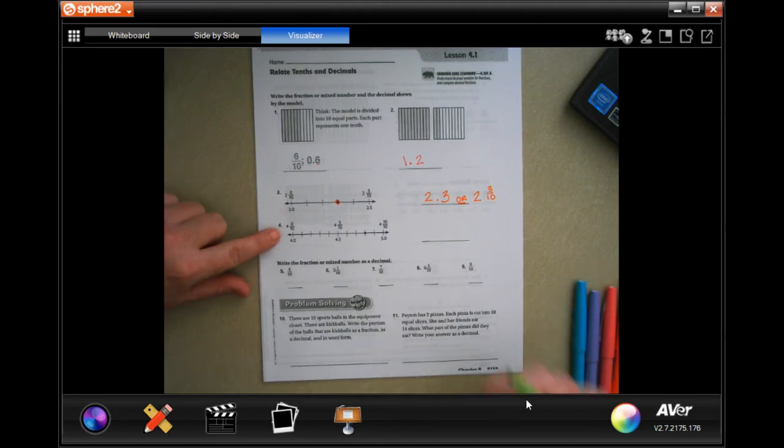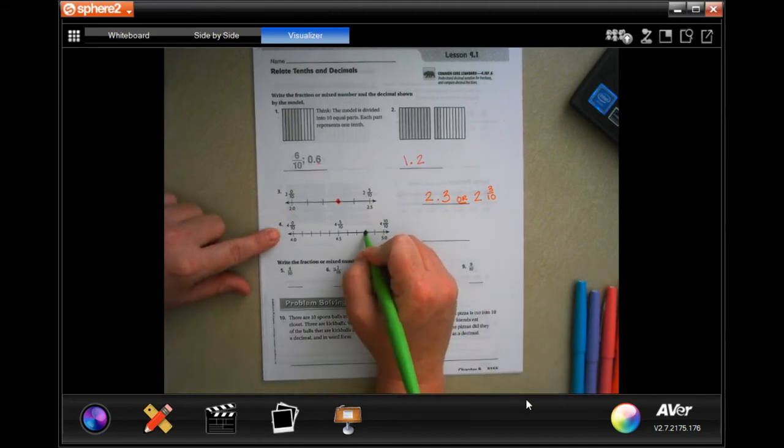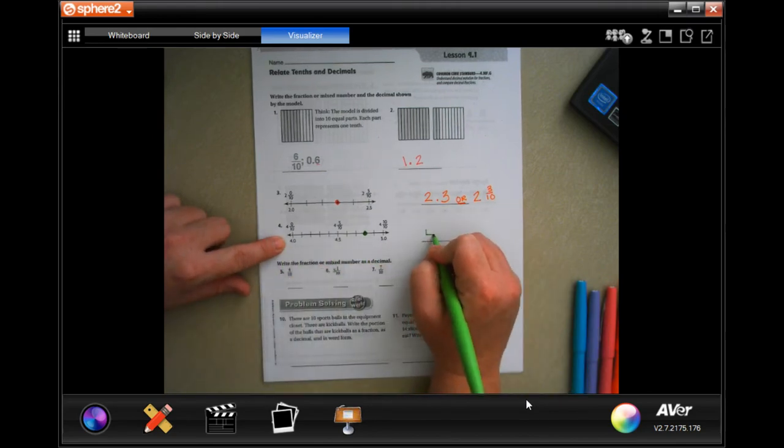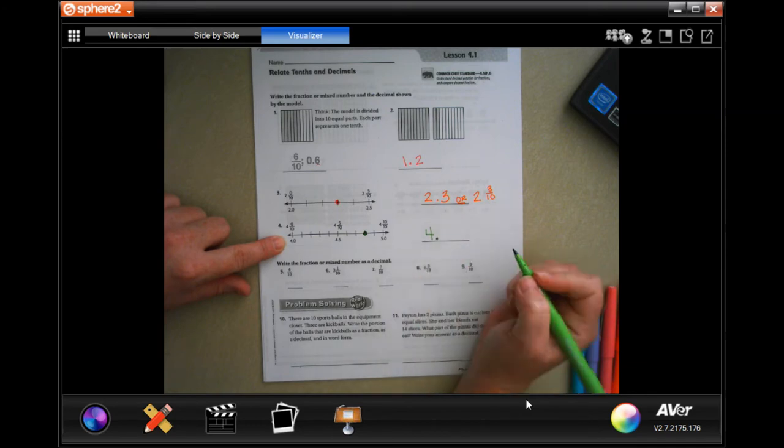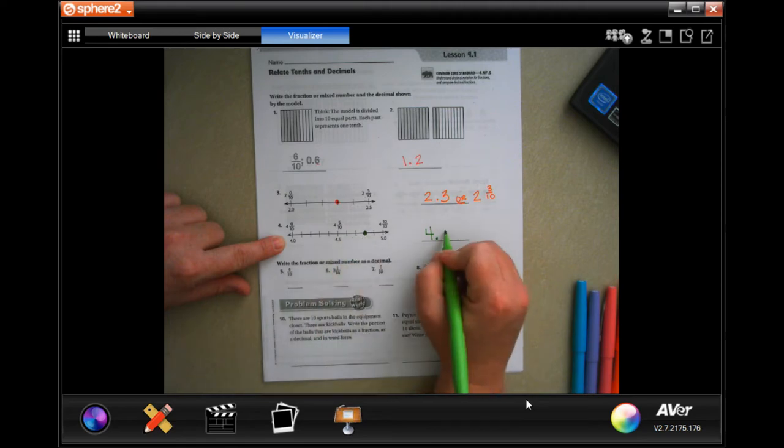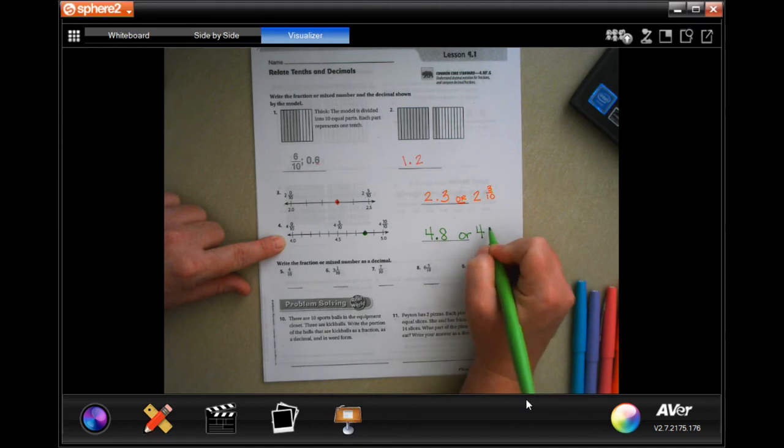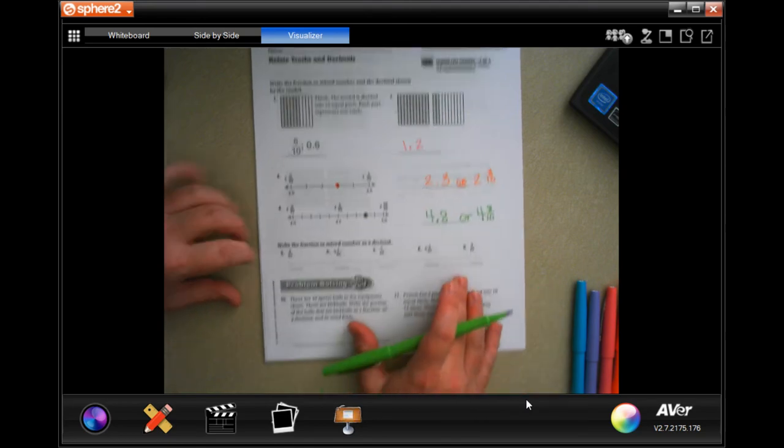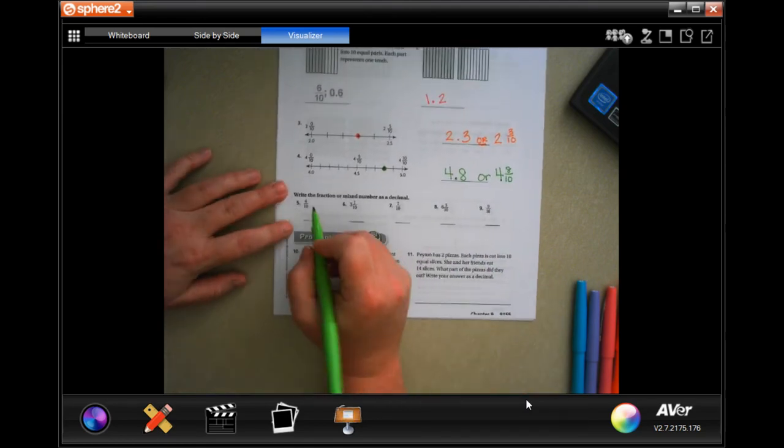Now this one, the dot is right here so it's between four point five and five, so it's still gonna be four point something. So point five, point six, point seven, point eight, or four and eight tenths. You can have either one of those.